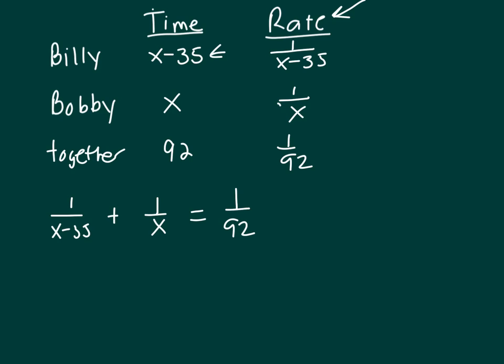So the first thing you need to do to solve this equation is clear your fractions, and your least common denominator would be a 92, an X, and an X minus 35. It's each one of your denominators in this case. You're going to multiply every term on both sides by 92X and an X minus 35.